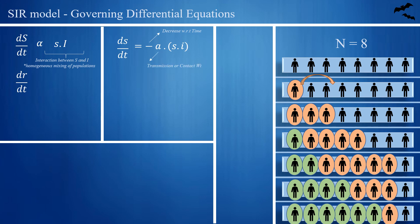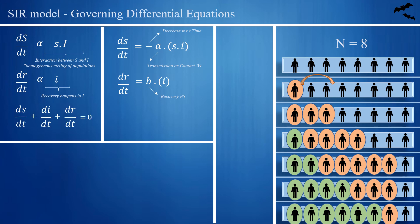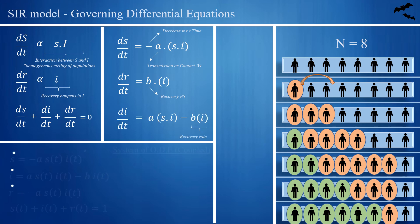A is the transmission or contact weight. Loosely speaking, parameter A gives us information about the average number of contacts per person per time. dr/dt is proportional to I, as recovery happens amongst infected subjects. Removing the proportionality, we have the constant B that gives information on the recovery weight or rate amongst I. Rearranging gives us di/dt. These equations are now in coupled form — a system of ordinary differential equations. They are coupled, meaning the rate of change of one parameter influences the other, similar to an aircraft's pitch, roll, and yaw. We need initial conditions to drive our ODEs ahead.